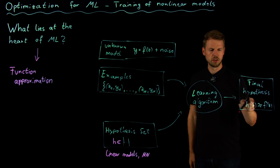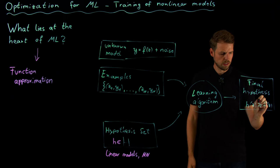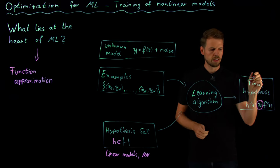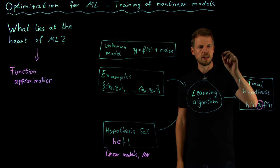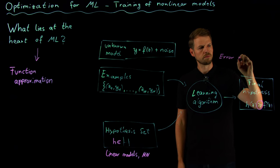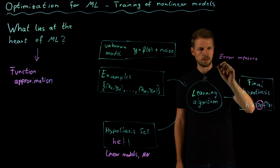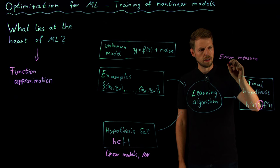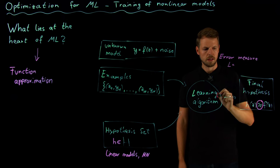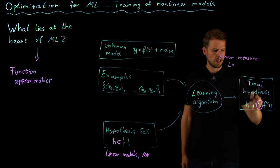What we need is—the question is this approximation here, what does this mean? So what you can define is you can say that we have an error measure, and let's call this L.